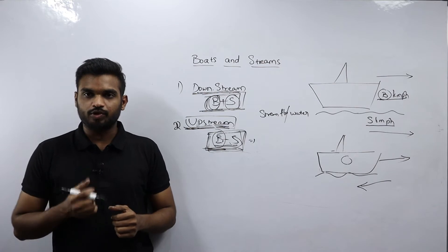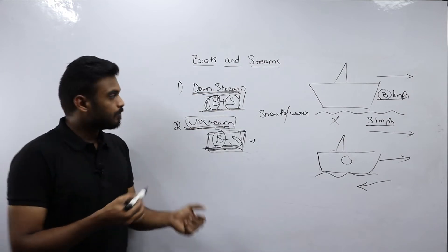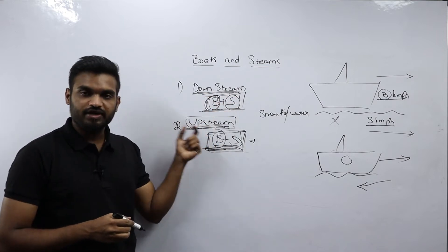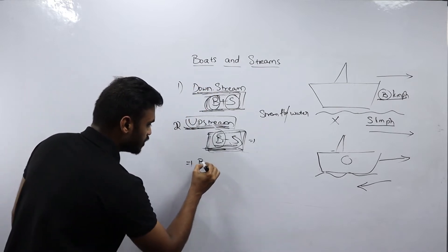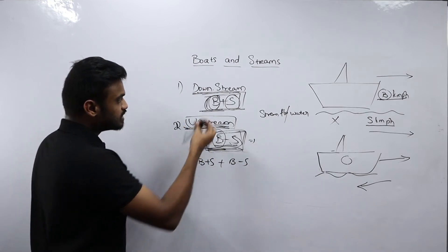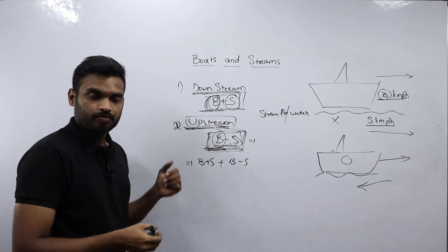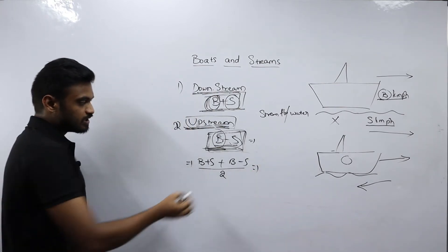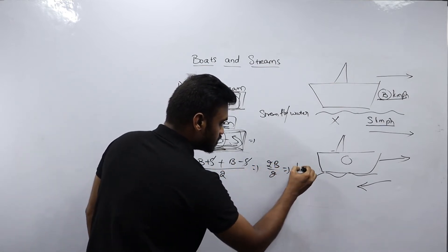We don't know what the actual speed of the boat is — that is, what is the speed of the boat when there is no water. How can we get it? By adding both downstream and upstream. Downstream is B plus S and upstream is B minus S. If I add both, S values cancel and I get 2B. But the boat is counted twice, so I divide by 2 to get the actual speed of boat B.